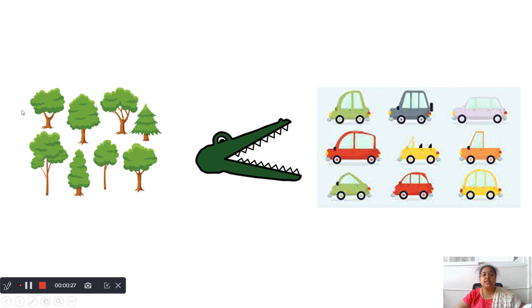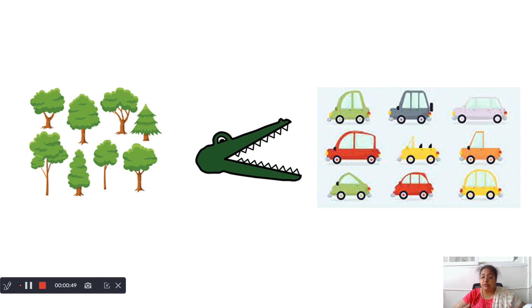How many trees are there on the left side, children? 1, 2, 3, 4, 5, 6, 7, 8. There are 8 trees on the left side of the crocodile. What is there on the right side? Let us count the number, children. Here we are focusing on the number of objects. So 1, 2, 3, 4, 5, 6, 7, 8, 9. How many are on the left side? 8. On the right side? 9.